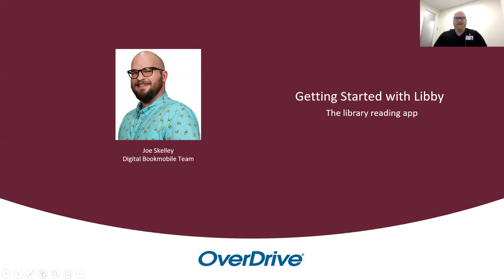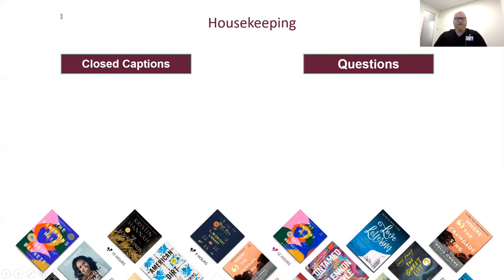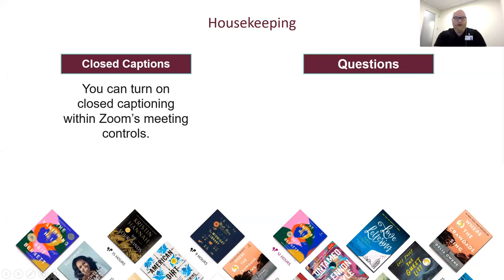So let's dive into getting started. But before we do that, just a few housekeeping items. We do have closed captions enabled for our webinar and you can adjust those in your Zoom meeting controls. If you need to toggle those on or off, you can do that there. And if they get in your way, you can use your mouse or finger to drag them to a different part of your screen.